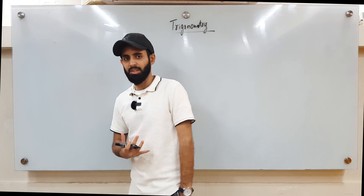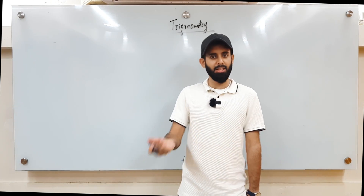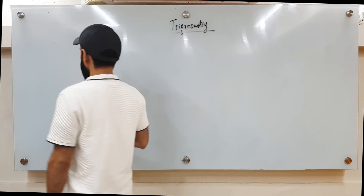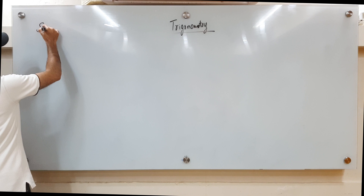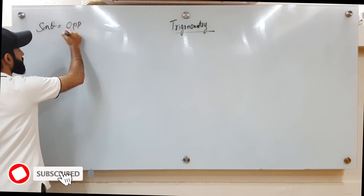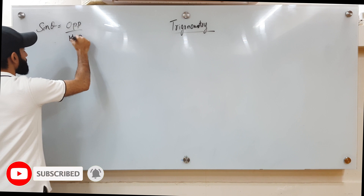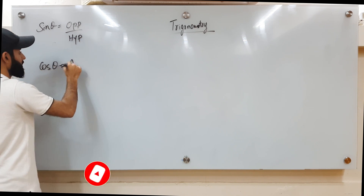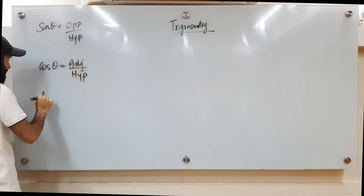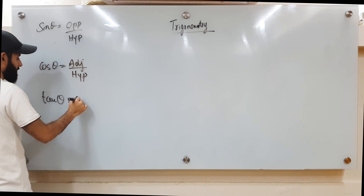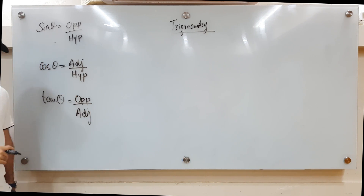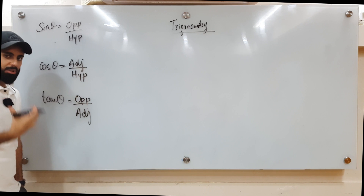A lot of the trigonometry in Ad Math, as far as the basics are concerned, is the same as regular math. We have trigonometric functions such as sine, cos, and tan. The three trigonometric ratios are: sine theta equals opposite over hypotenuse, cos theta equals adjacent over hypotenuse, and tan theta equals opposite over adjacent.